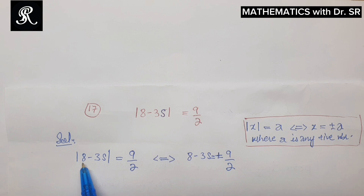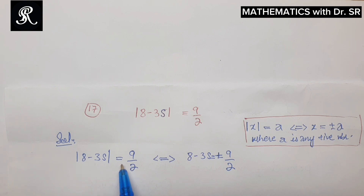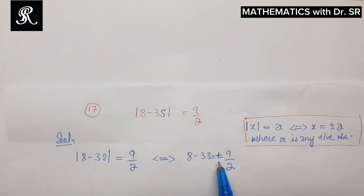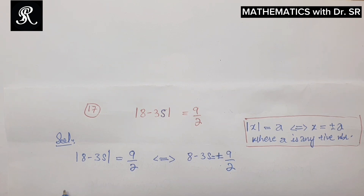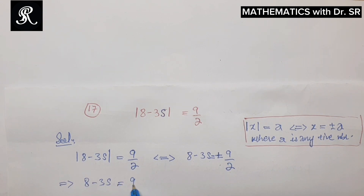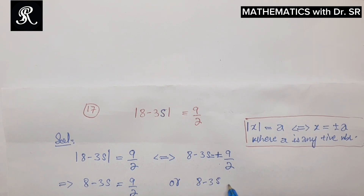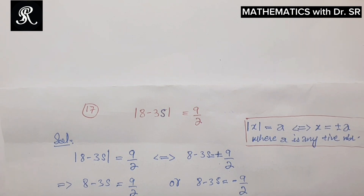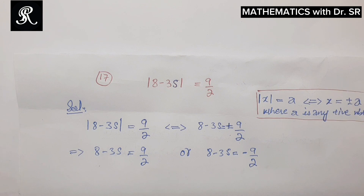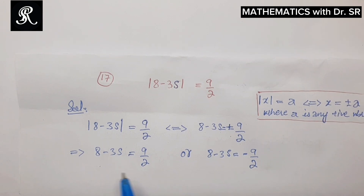It follows that the absolute value of 8 minus 3s is equal to 9/2 if and only if 8 minus 3s is equal to plus or minus 9/2. This means that 8 minus 3s is equal to 9/2, or 8 minus 3s is equal to negative 9/2. We need to solve both equations for the variable s.